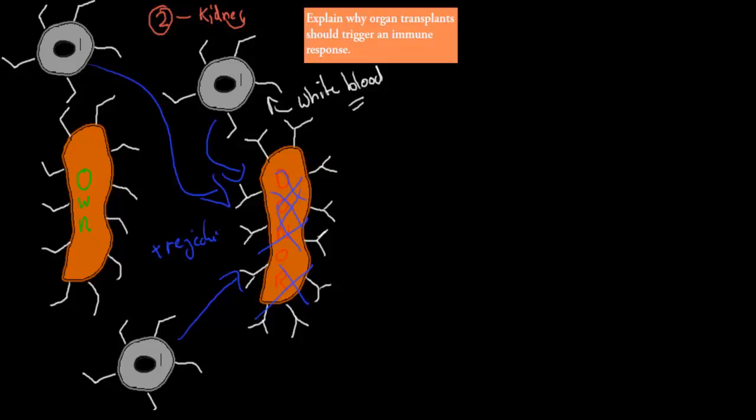The dot point itself says explain why organ transplants should trigger an immune response. We've just explained, right? We've just talked about why that occurs. Because our own body cells, especially white blood cells who are meant to defend our body from invaders, has looked at the actual antigens on top of the kidney and seen it as a threat because it's not matching its own, and thereby has decided to invade and destroy the tissue, which is in this case actually bad for us because we don't want the kidney to be destroyed.